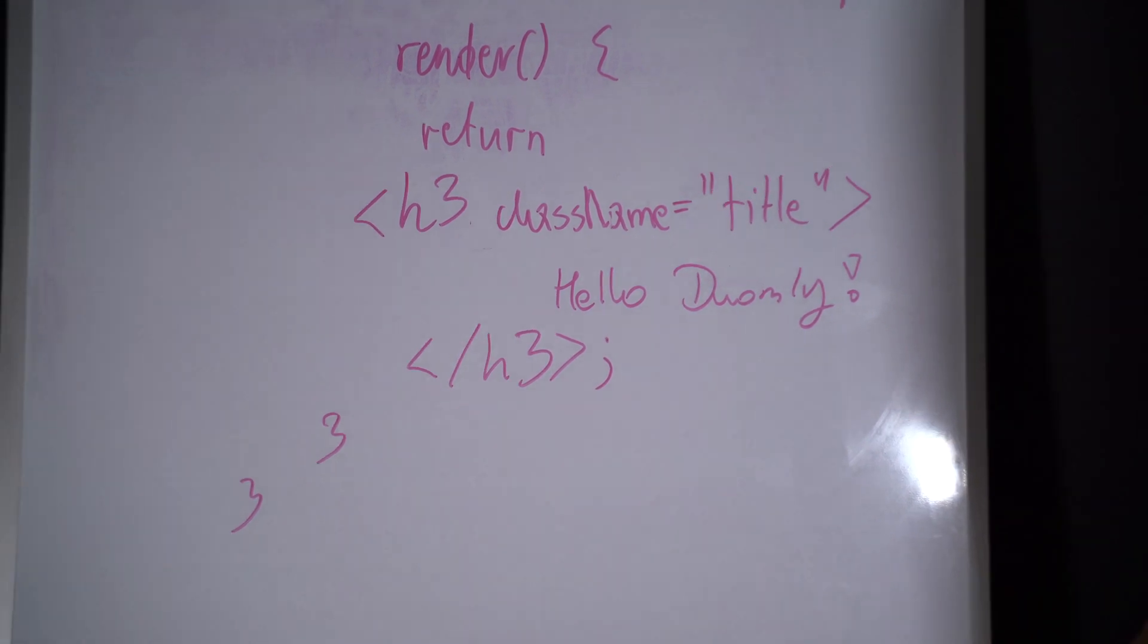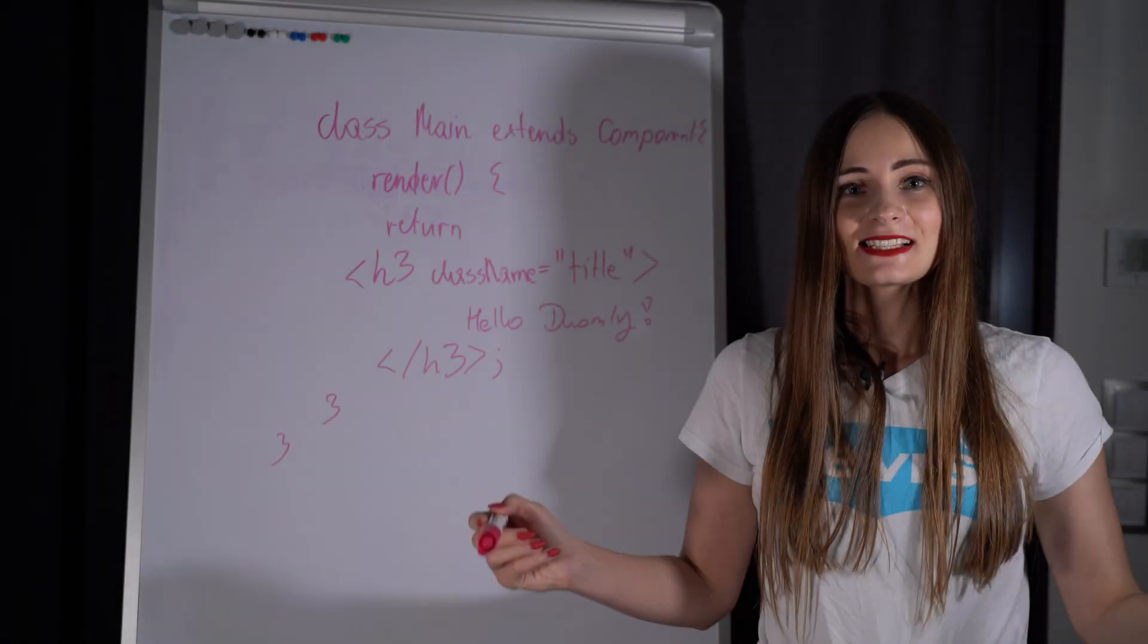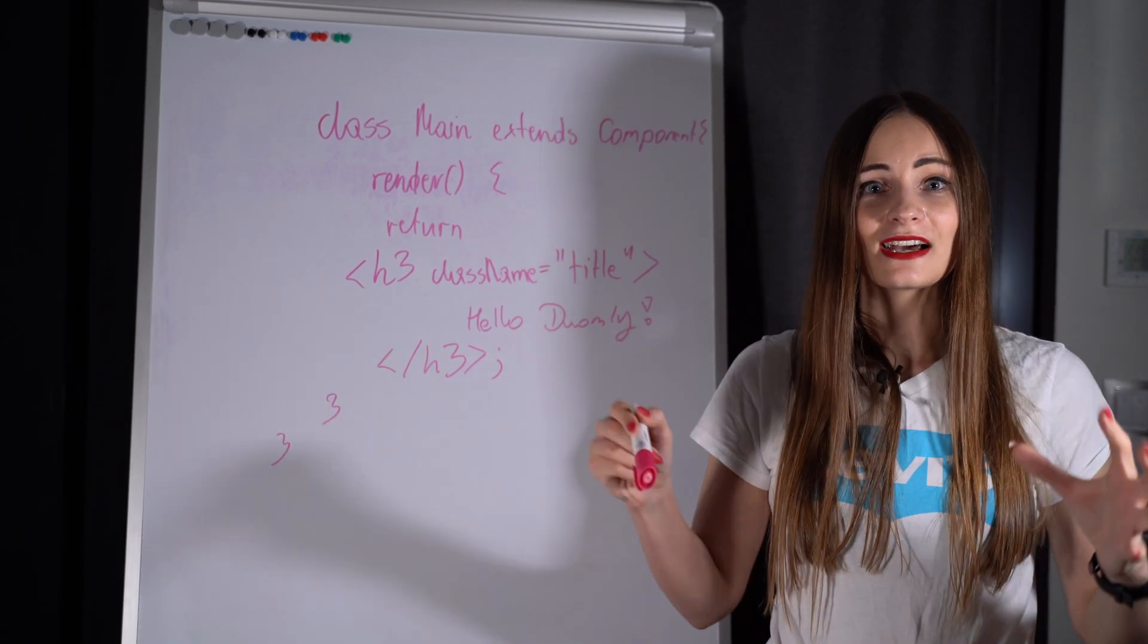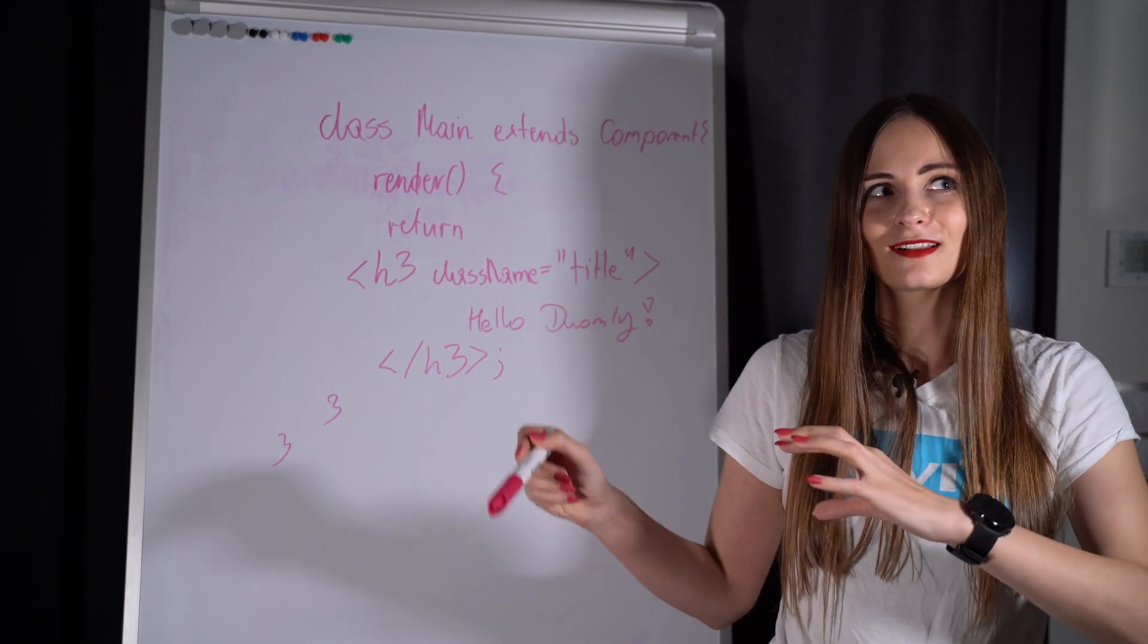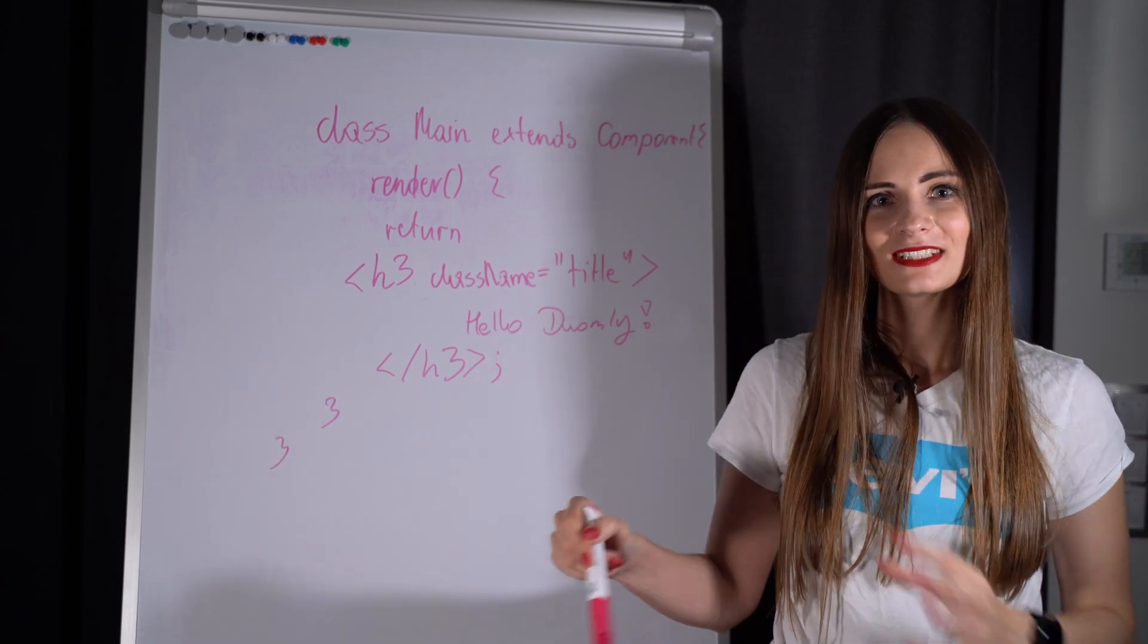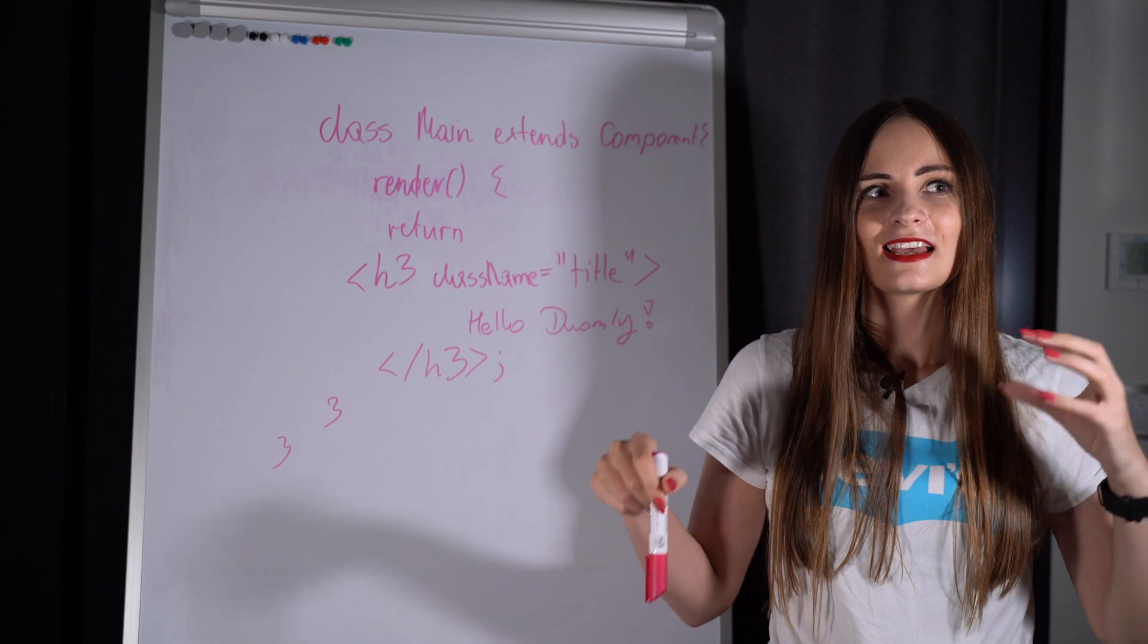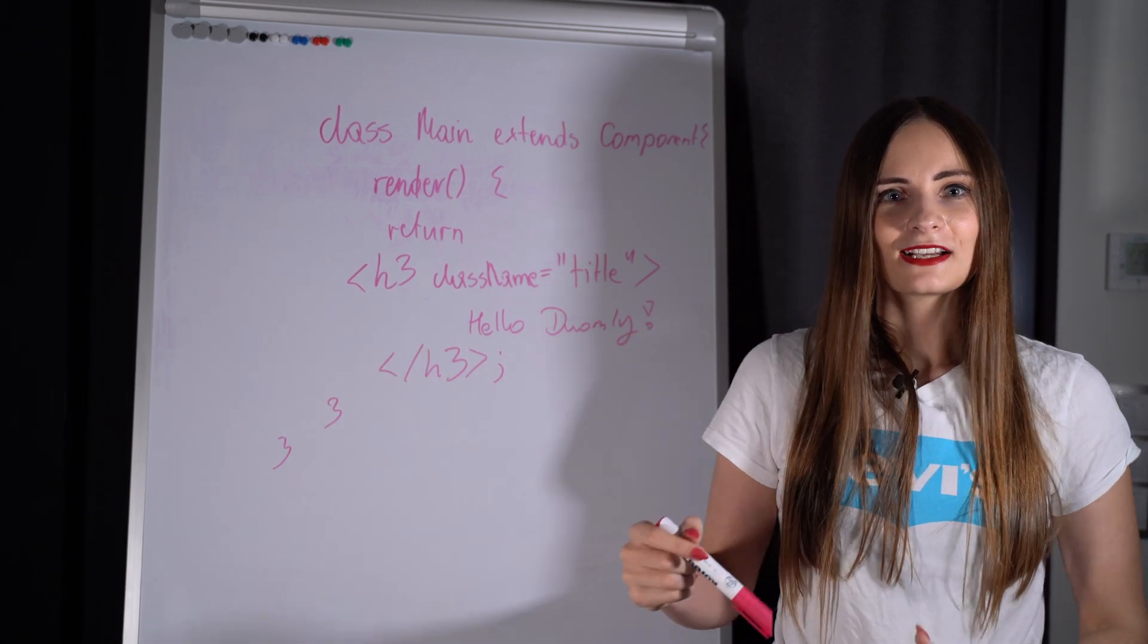So what is JSX? JSX is kind of ReactJS specific syntax which allows us to create HTML with power of JavaScript. In other words, we can say that it's kind of a templating language with possibility of creating inside JavaScript.